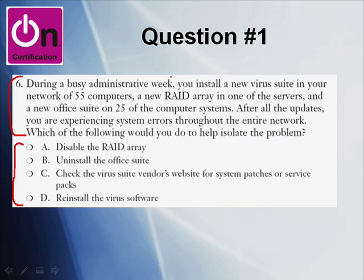During a busy administrative week, you install a new virus suite in your network of 55 computers, a new RAID array in one of the servers, and a new office suite on 25 of the computer systems. After all of the updates, you're experiencing system errors throughout the entire network. Which of the following would you do to help isolate the problem? At first blush, this is a pretty bread-and-butter network troubleshooting issue. You might ask yourself: how much of this is fluff and how much is actually relevant to answering the question?